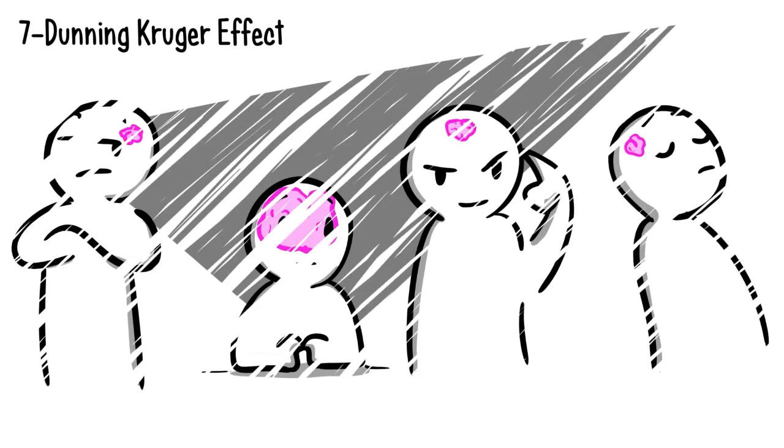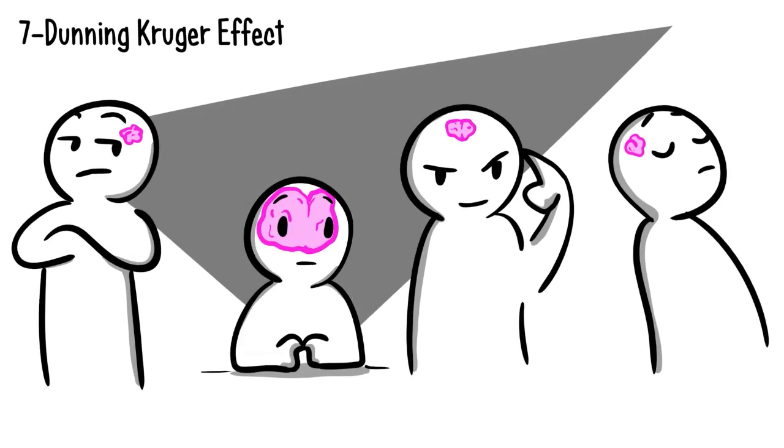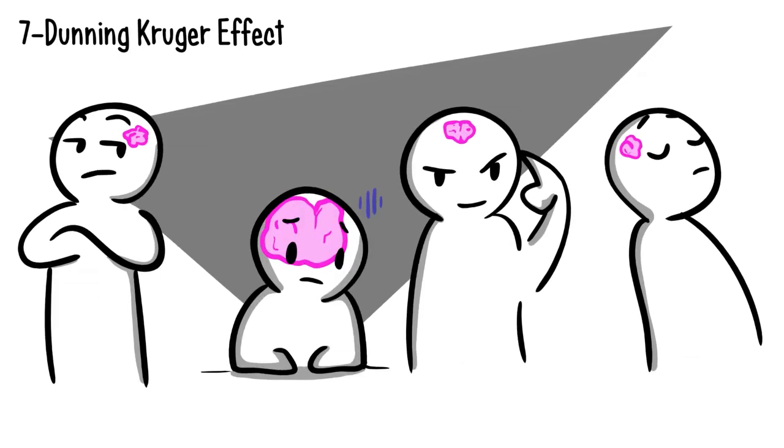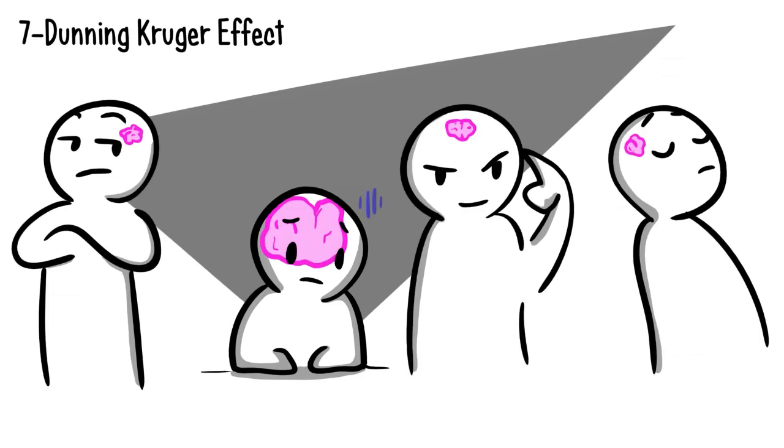Fact number 7. Dunning-Kruger effect. Did you know that intelligent people tend to underestimate their intellect? This is called the Dunning-Kruger effect. This is a phenomenon that occurs when people fail to appropriately evaluate their capacity to do things, therefore minimizing their potential.